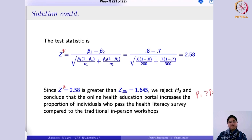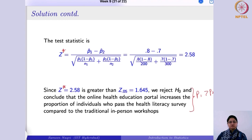The conclusion drawn at the end is equally important — you must interpret and report results clearly in the form of statements aligned with the original problem. In summary, we have covered different two-sample tests: the test for the difference of two means (including paired data), the test for the ratio of two variances using the F-distribution, and the test for the difference of two proportions.